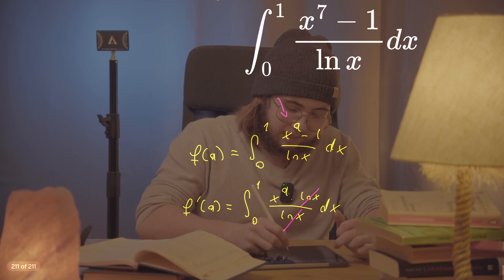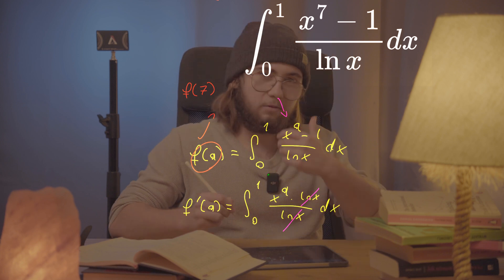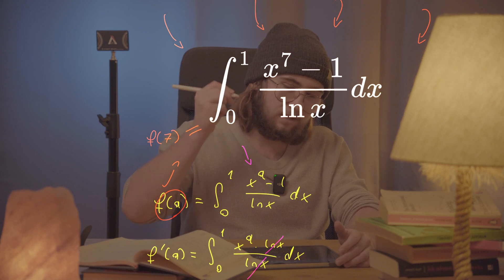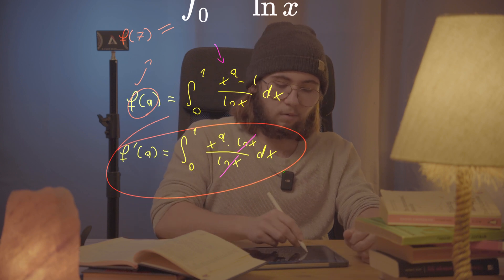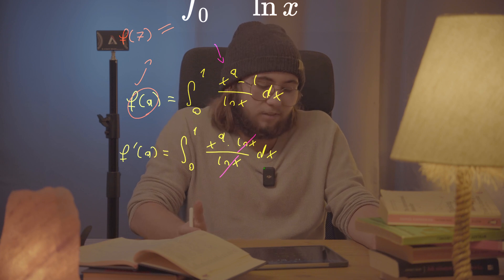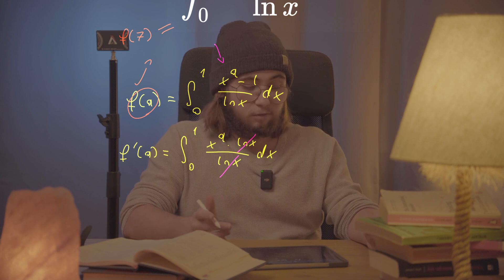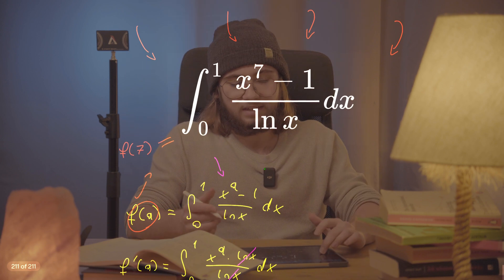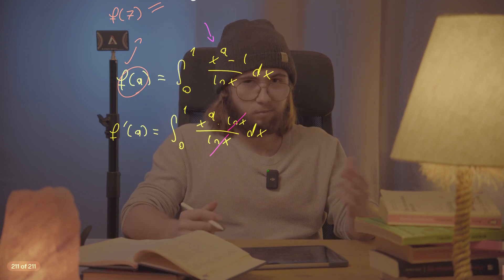The nice thing is that if I take this function f(a) and plug in a equal to seven, what I get is precisely the integral I'd like to evaluate in the first place. So if I can evaluate f'(a), integrate it with respect to a to find f(a), and then plug in a equals seven, I get the value of my original integral without computing the awful-looking thing directly.